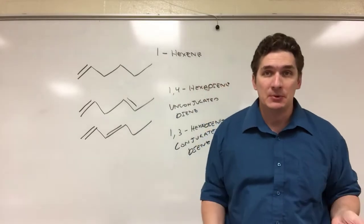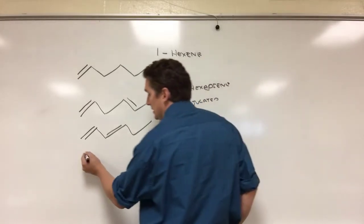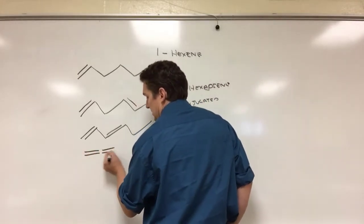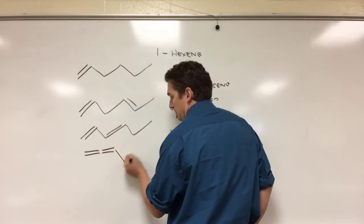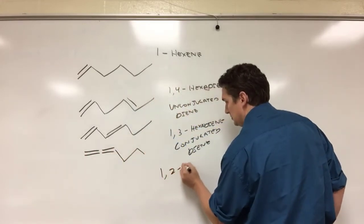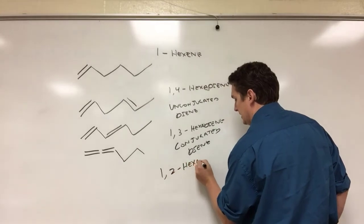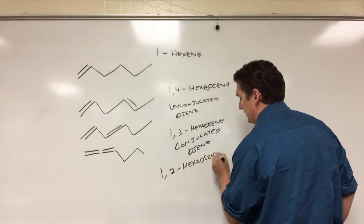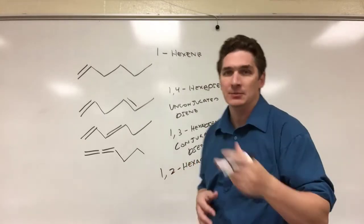Now what if there's no separation between the two? Well, in that case, 1,2,3,4,5,6, this would be 1,2-hexadiene, and this is what's called a cumulated double bond.